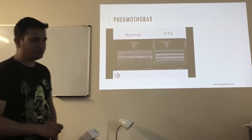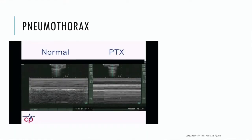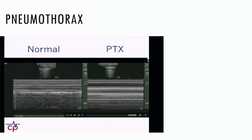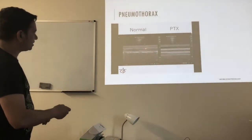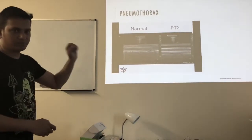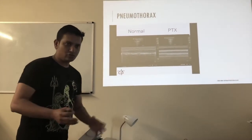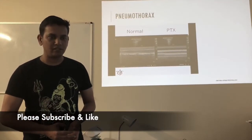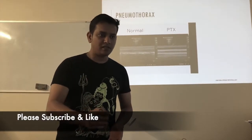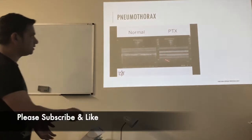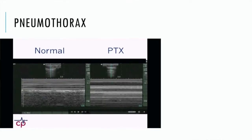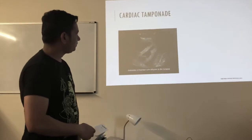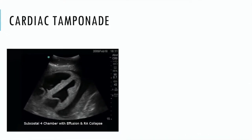In M-mode on the lungs, the pleural line should slide normally. To determine if there is a pneumothorax, under normal circumstances you see the seashore sign — a normal, free appearance. If you see a barcode sign instead, that is abnormal and indicates pneumothorax. Free fluid around the heart indicates cardiac tamponade.